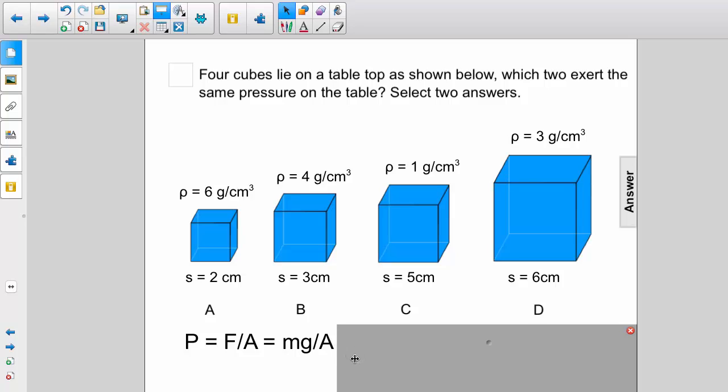Now the mass is just the density times the volume. So our expression becomes density times volume times g divided by area.